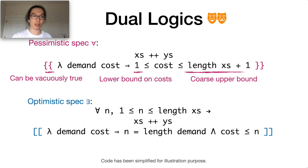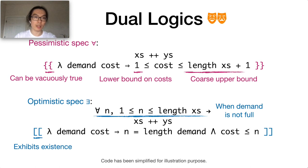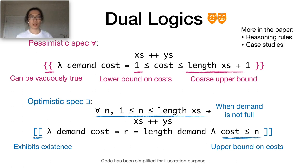On the other hand, an optimistic spec talks about some particular cases. For example, the optimistic spec we show here talks about the case that the demand is not larger than the first parameter of append. Compared with the pessimistic spec, an optimistic spec shows the existence of the case, and it cannot be vacuously true, and it shows a good upper bound on cost.